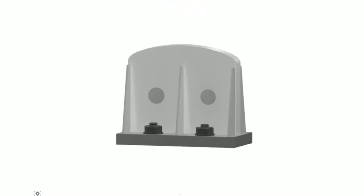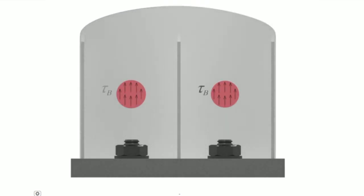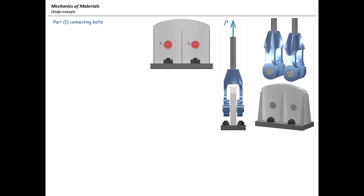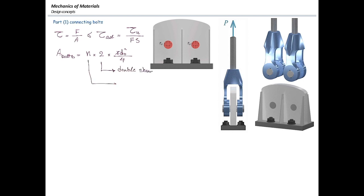Based on that, I can determine the area and the design equation. The design equation is: stress must be smaller than the allowable stress. Shear stress τ equals force over area, and that must be smaller than the allowable stress, which is the ultimate stress of the material divided by the factor of safety. Area of the bolts = n (number of bolts) × 2 (for double shear) × π × d² / 4.